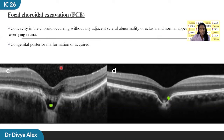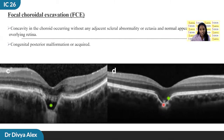Focal choroidal excavation can be described as a concavity in the choroid occurring without any adjacent scleral abnormality and normal-appearing overlying retina. It can be congenital or acquired. The FCE lesion could represent scarring of choroidal connective tissue from a previous inflammatory process. Two patterns have been described: conforming and non-conforming. In conforming FCE, the photoreceptor tips are in direct contact with the RPE, whereas in non-conforming, the photoreceptor tips appear detached from the underlying RPE with a hyperreflective cleft in between. This non-conforming FCE can be misdiagnosed as subretinal fluid.